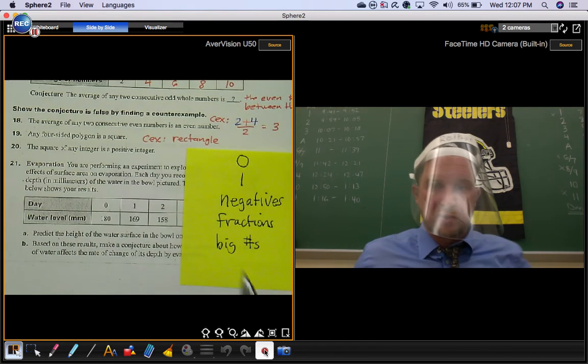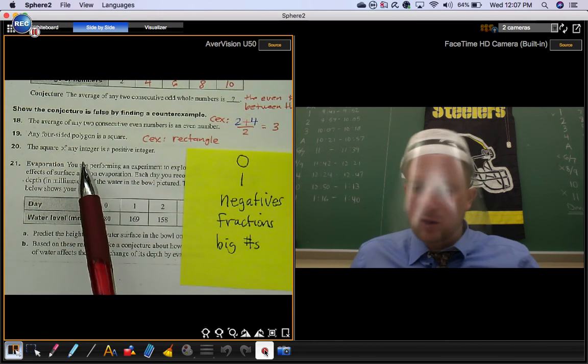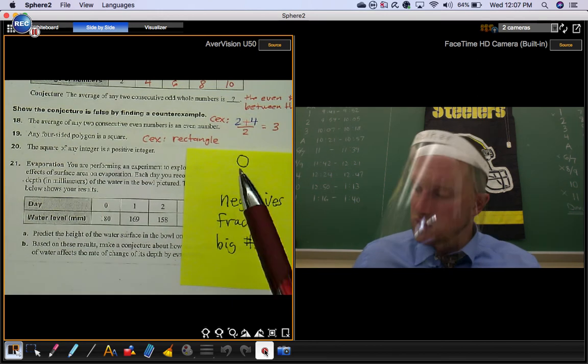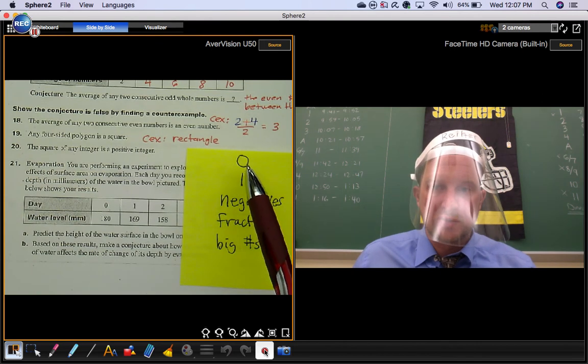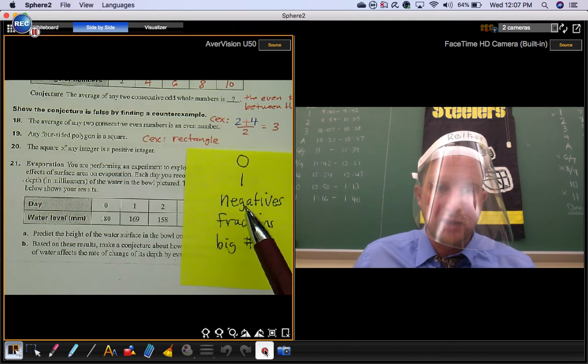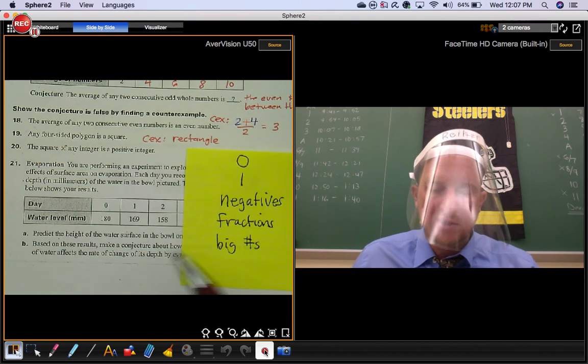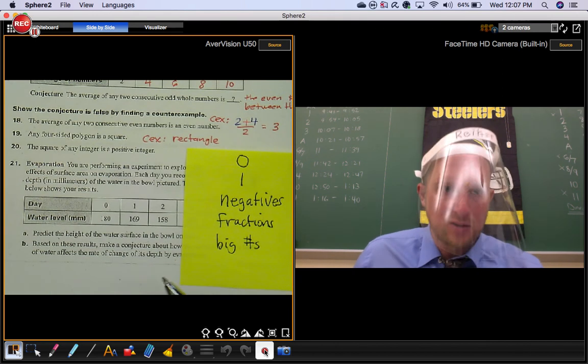Remember this list also. When they're asking you about certain numbers, these are the numbers that you should try. You should see what happens with zero, one, negatives, fractions, big numbers, and you keep using those until you find your counterexample.